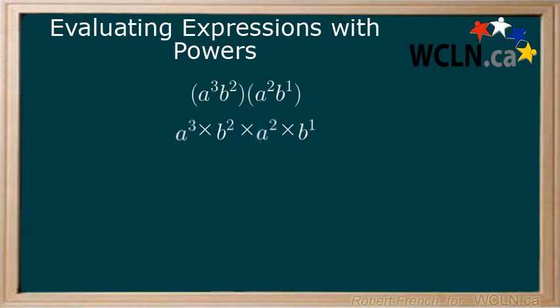Finally, order does not matter when multiplying multiple terms together in a row. Now using what we know about multiplying powers, we get a with an exponent of 3 plus 2 multiplied by b with an exponent of 2 plus 1. When we evaluate this, we get a to the power of 5 multiplied by b to the power of 3.